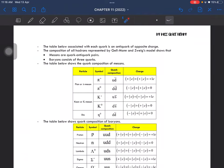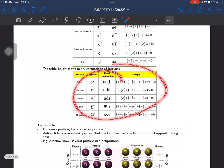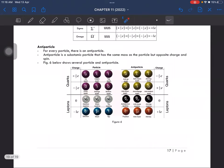The composition is represented by Gell-Mann and Zweig's model. Mesons are quark-antiquark pairs, baryons consist of three quarks. This is the composition of mesons, this one is baryons, and this is antiparticle. For every particle there is always an antiparticle.